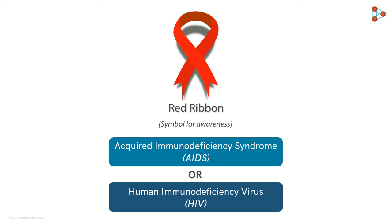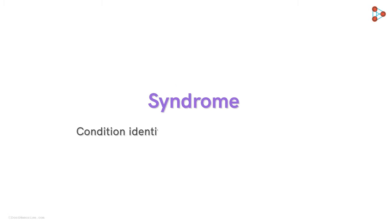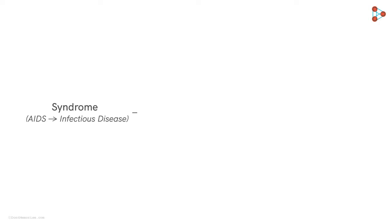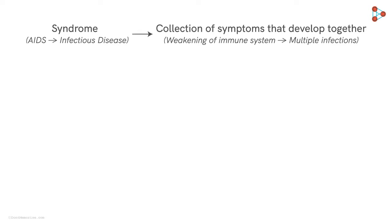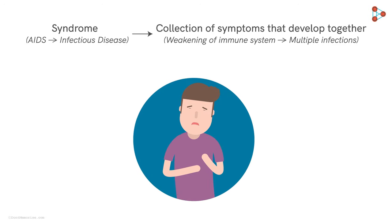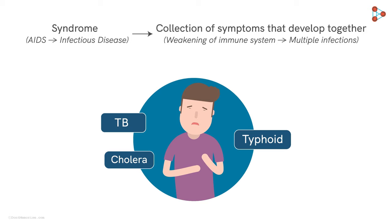Before moving ahead with the disease, let's first learn what we mean by a syndrome. It is a condition identified by a set of related symptoms. AIDS, or any syndrome, is a collection of symptoms that develop together. In the case of AIDS, multiple infections arise due to the weakening of the immune system, so the person suffering shows multiple symptoms all at the same time. For example, if the person contracts TB, typhoid, and cholera, then symptoms of all three will be collectively seen in the patient. This is why AIDS is called a syndrome.